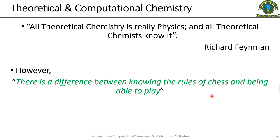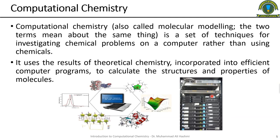Theoretical chemistry is based on fundamental laws from physics. But how do we use it in chemistry? The computational chemistry is the applied form of theoretical chemistry. We will not go into the details of theoretical chemistry.